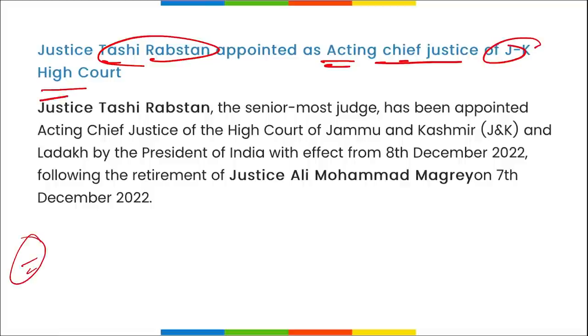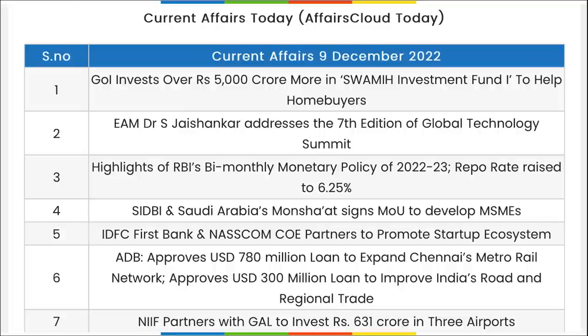Justice Tashi Rabstan has been appointed as the Acting Chief Justice of the Jammu and Kashmir High Court.